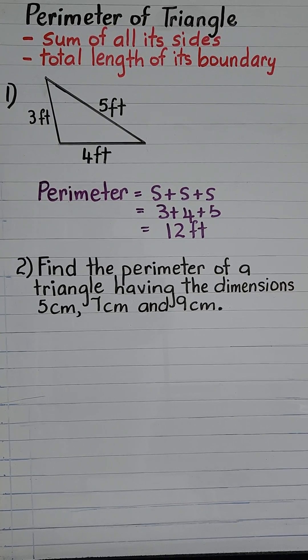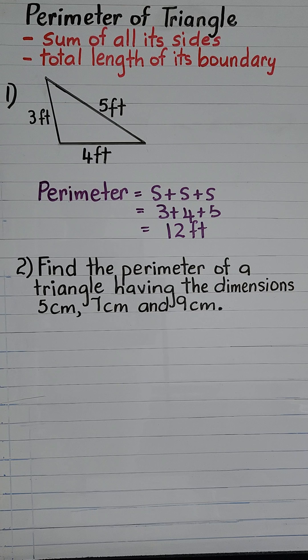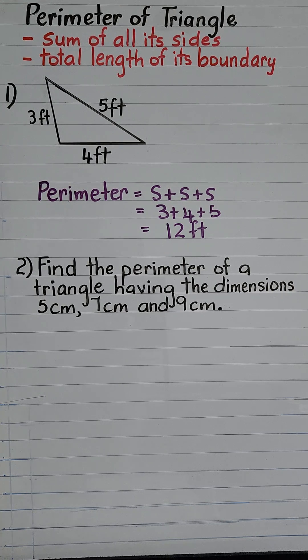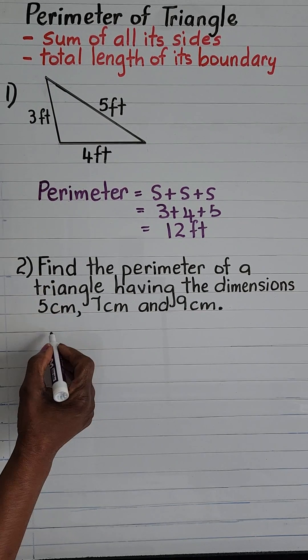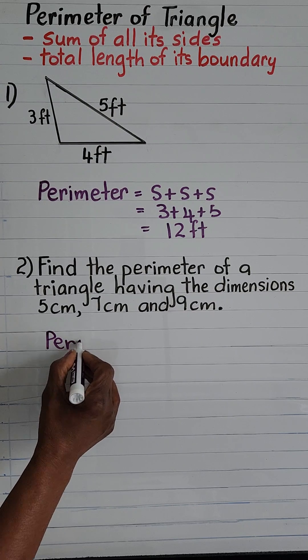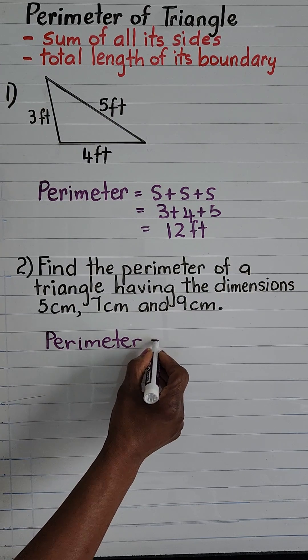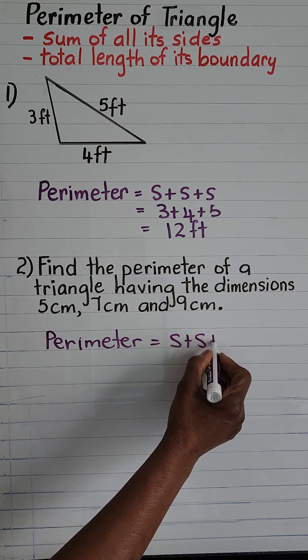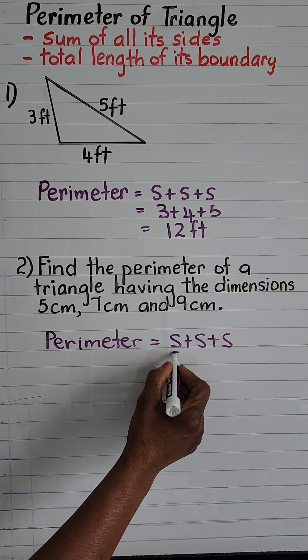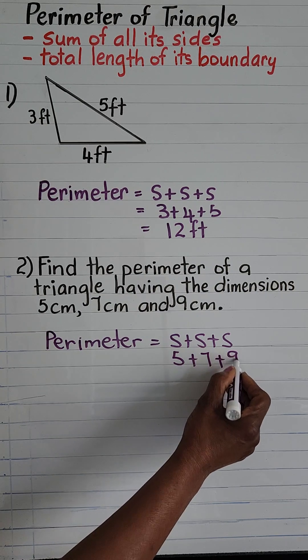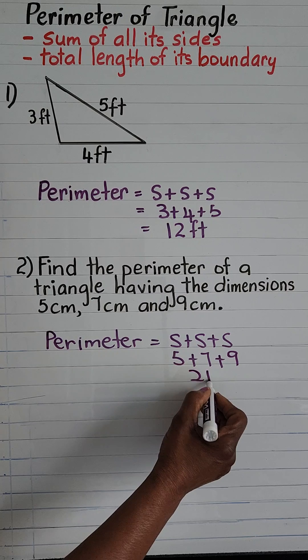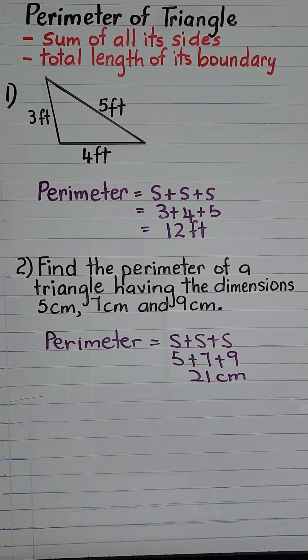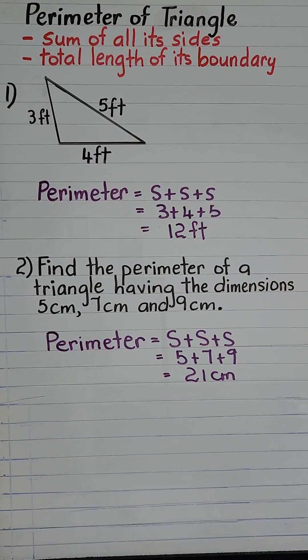Find the perimeter of a triangle having the dimensions five centimeters, seven centimeters, and nine centimeters. Again, the triangle has three sides, so to find the perimeter we add the measurements of the three sides. Perimeter equals side plus side plus side and that is equal to five plus seven plus nine and that is equal to 21 centimeter.